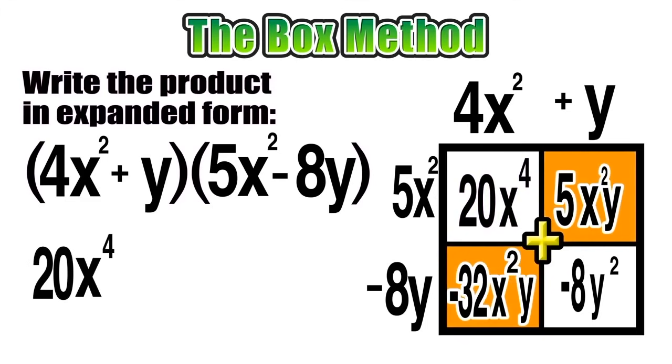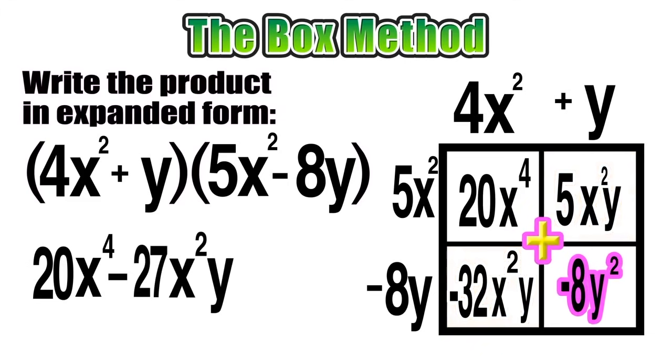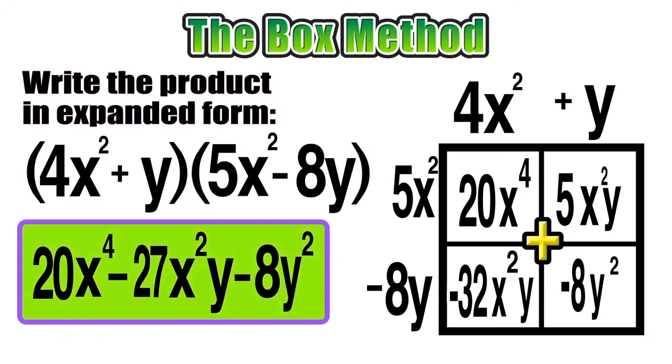Next, we should notice that we have a pair of like terms: negative 32x squared y and 5x squared y are both x squared y terms, so we can combine them by finding the sum of the coefficients, which in this case is negative 27x squared y. Now all that we have to do is include the minus 8y squared term, and now we have our product in expanded form, and we're done.